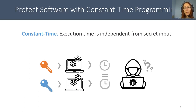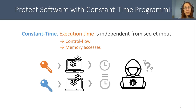A solution to this kind of attacks is to use constant time programming. The idea is that the execution time should be independent from the secret. The execution time basically depends on the control flow and the addresses of memory accesses because of the cache. So formally, a program is constant time if for all pairs of executions that only differ by their secret input, the control flow and the memory accesses are the same.